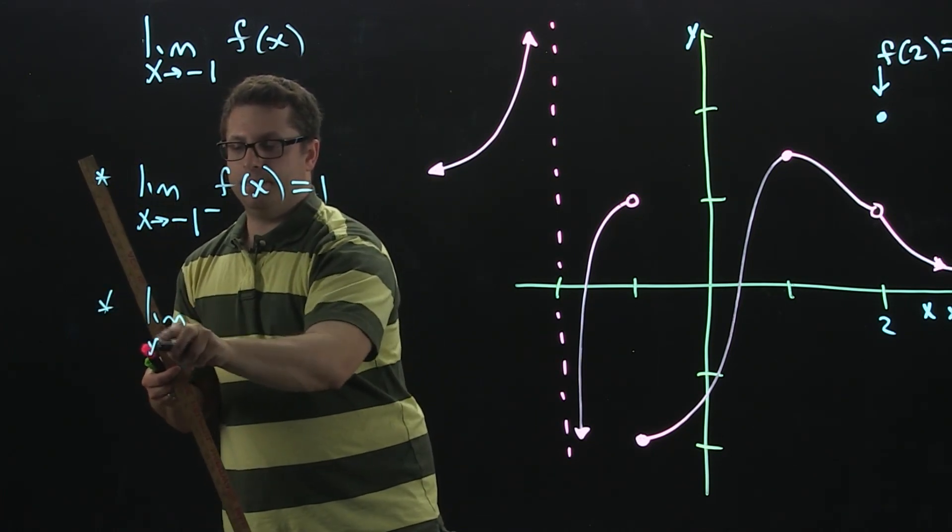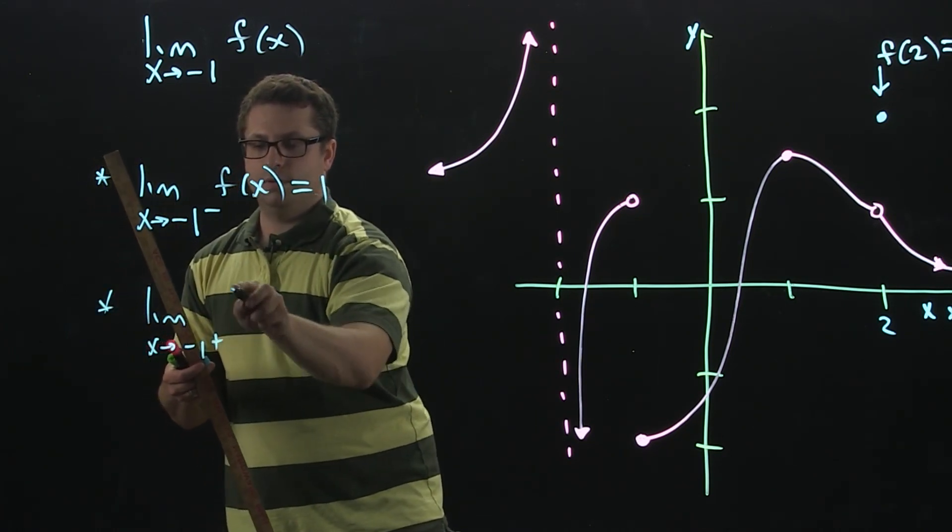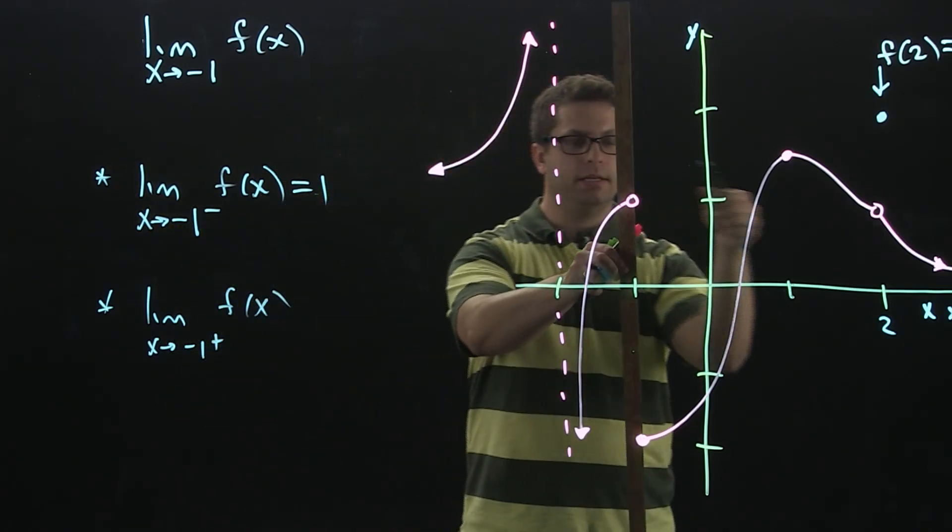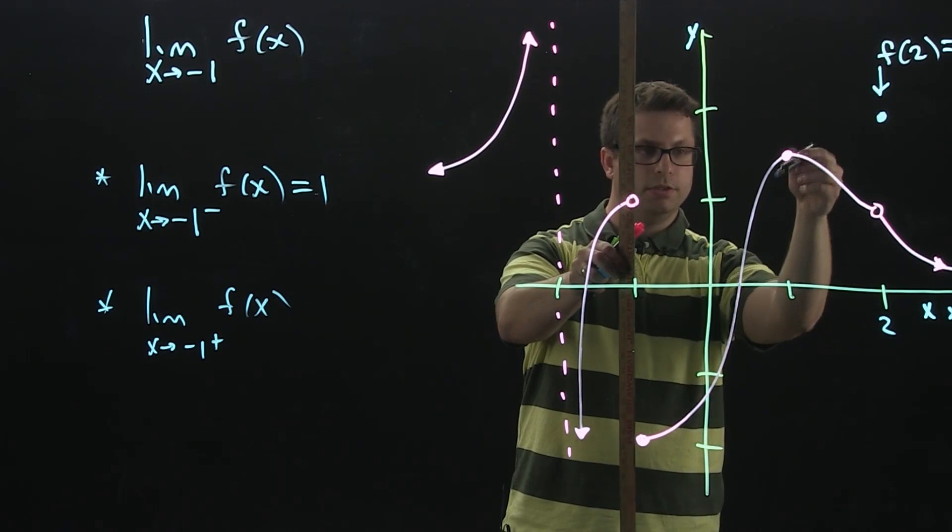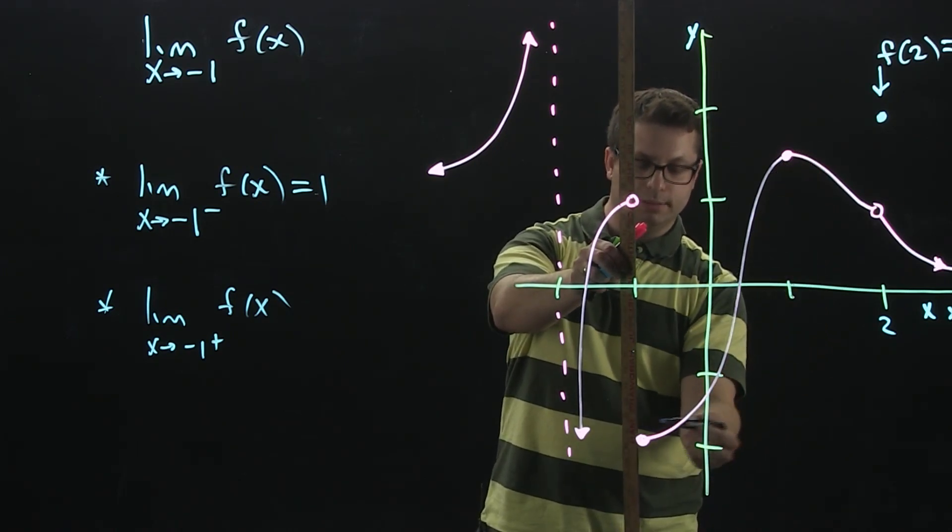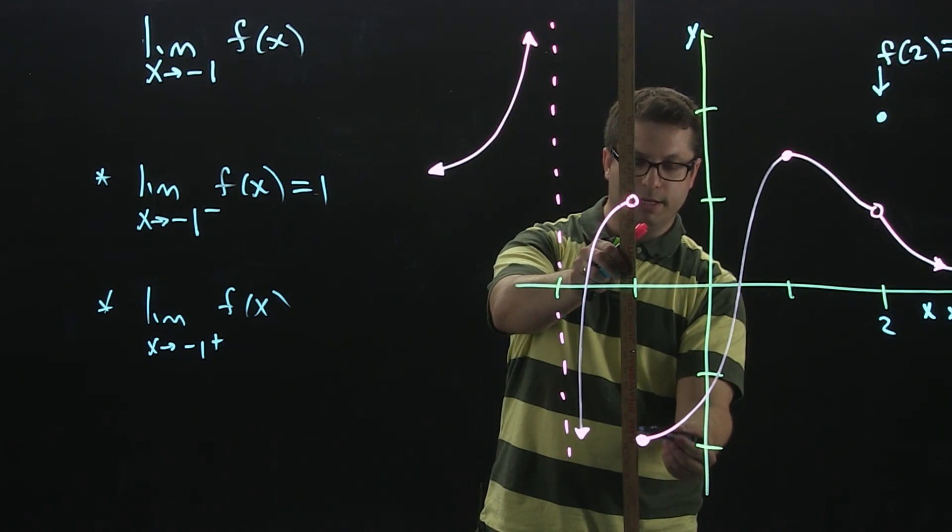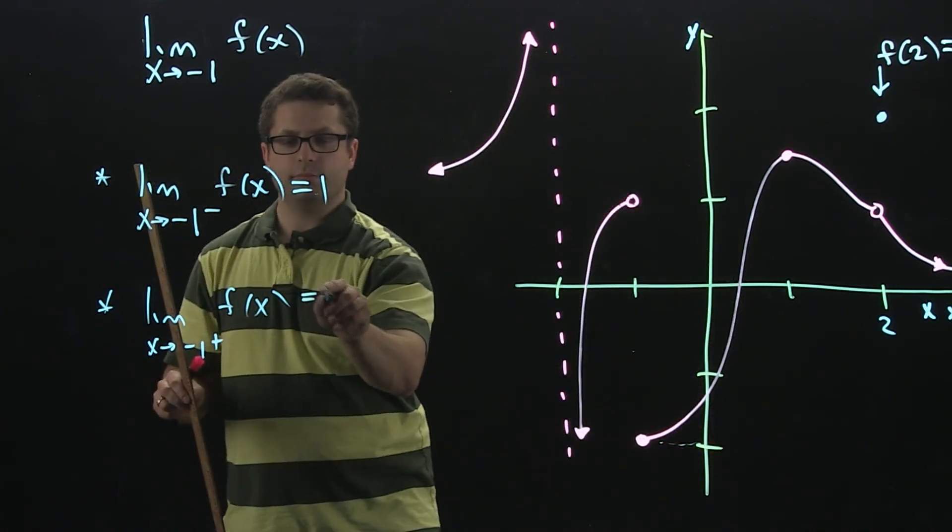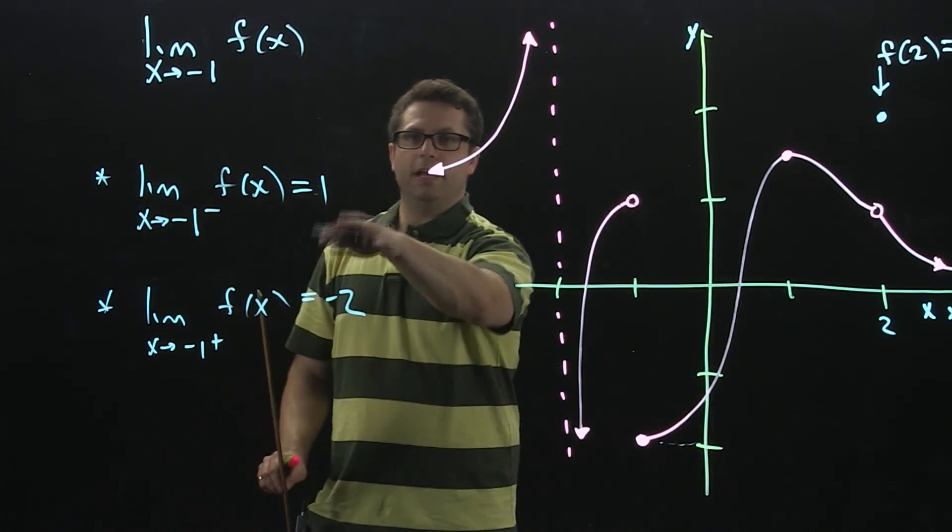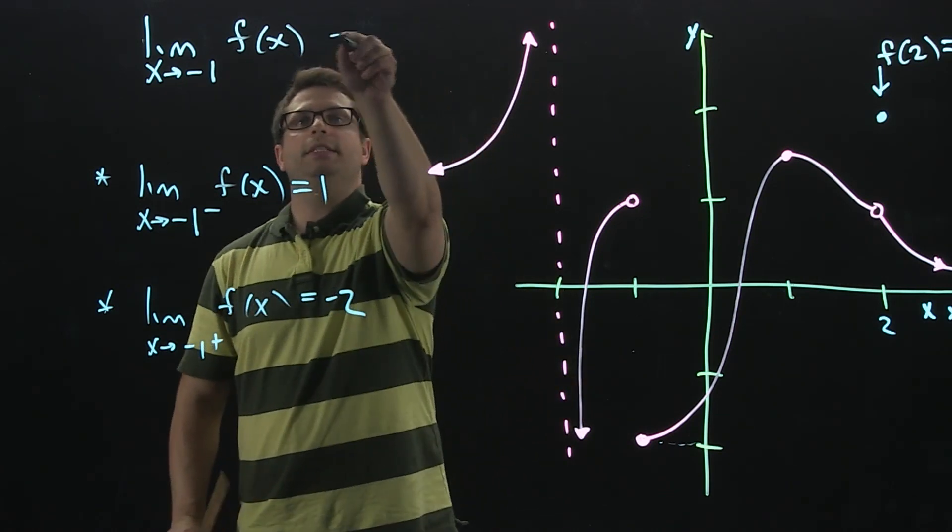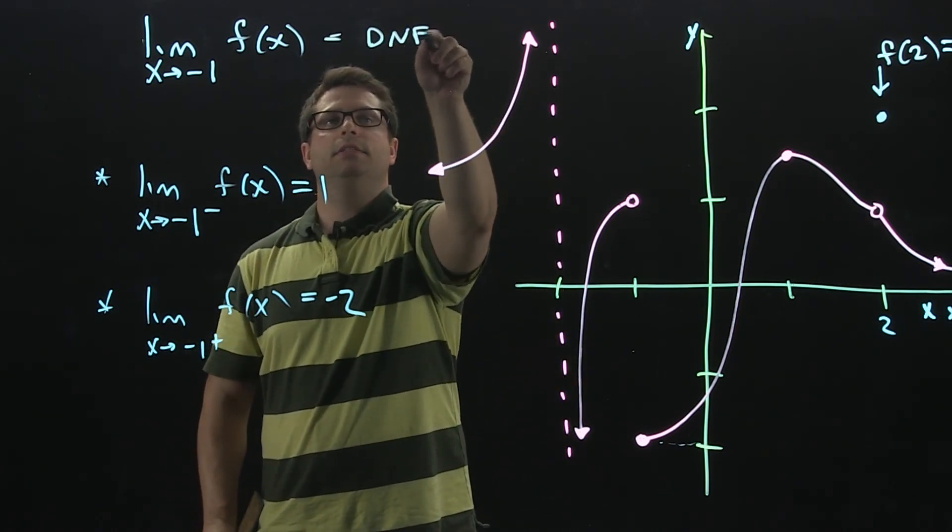Then, for the right-hand limit, ruler at negative 1, approaching from the right, so I'm coming down. When I get to negative 1, or as I get really close to negative 1, I would expect the point to be here, which looks like it's at negative 2. Now, since the left and right-hand limits don't match, 1 doesn't equal negative 2, we get to say the general limit does not exist.